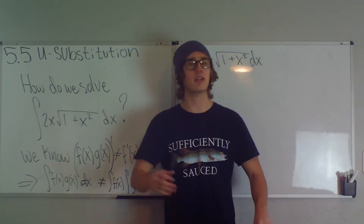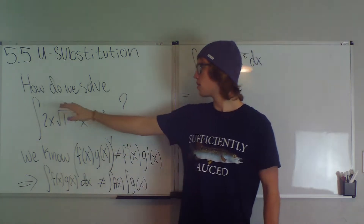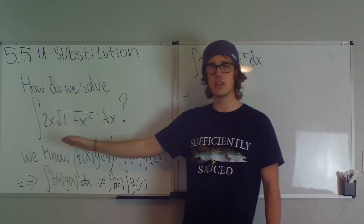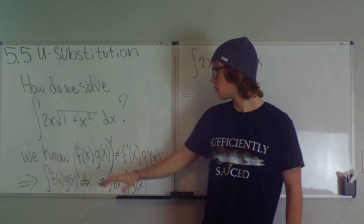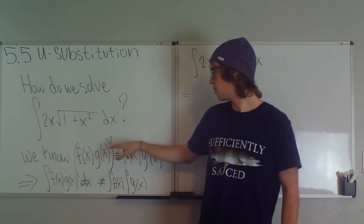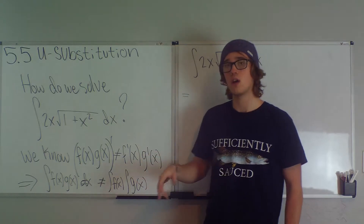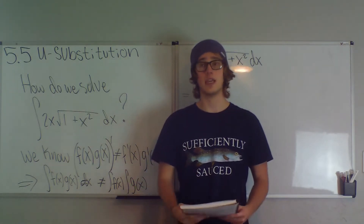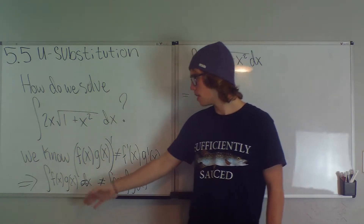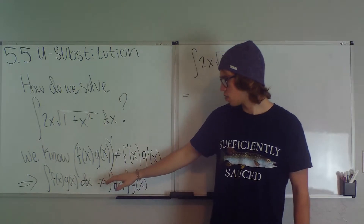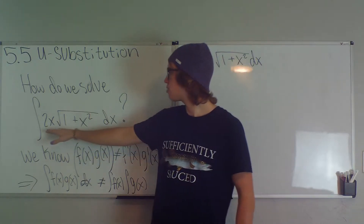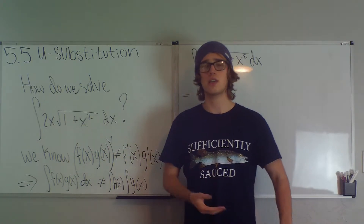We have our FTC, our table of anti-derivatives and all that, but how would we solve something like this: the integral of 2x times the square root of 1 plus x squared dx? That doesn't fall under one of the obvious integrals we have. We know the derivative of f(x)·g(x) is not equal to f'(x)·g'(x) — we have to use the product rule. So that means the integral of f(x)·g(x) dx is not equal to the integral of f(x) dx times the integral of g(x) dx. We can't just split this into two integrals and multiply them together.